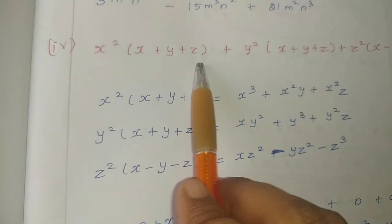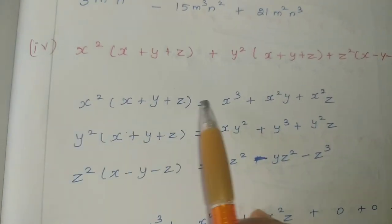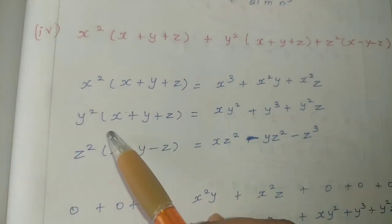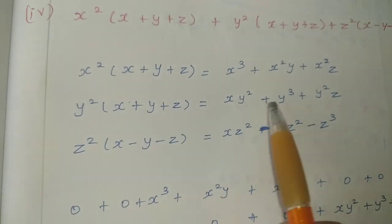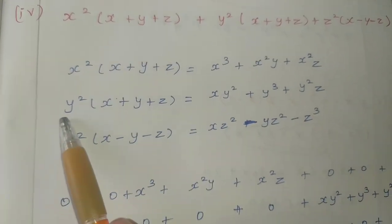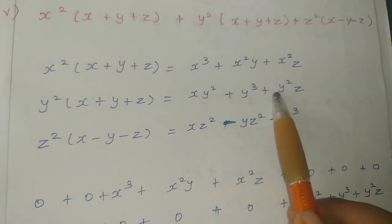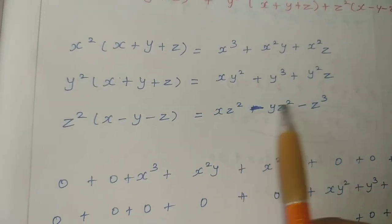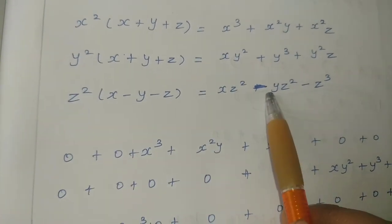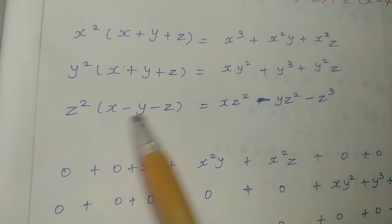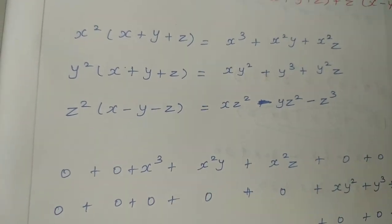Now the next expansion with x, y, z. x square into x gives x cube. x square into y gives x square y. x square into z gives x square z. Then y square into x. Plus into minus gives minus — x square into y into z square gives x square y z square. z square into z gives z cube.